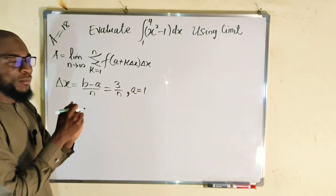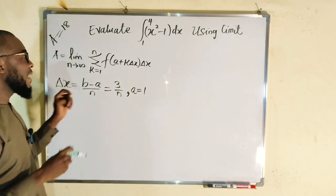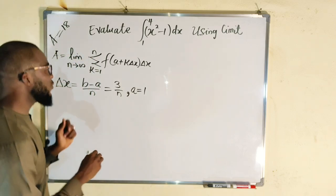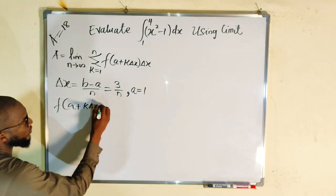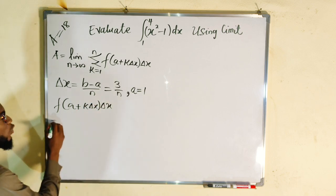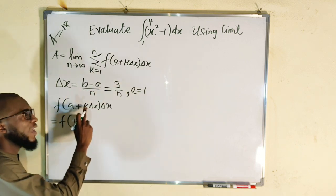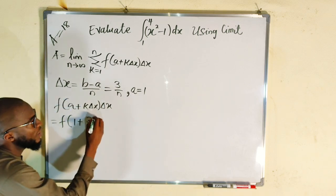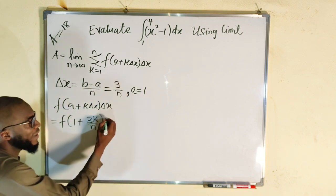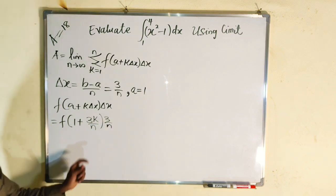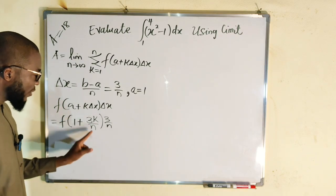I would like to start by simplifying f(a + k·Δx)·Δx before taking the summation. So: a is 1, plus k times delta x which is 3 over n, giving 1 plus 3k over n. Multiplied by another delta x outside, which is 3 over n. Remember our function is x squared minus 1, so we replace 1 plus 3k over n with x, then simplify.